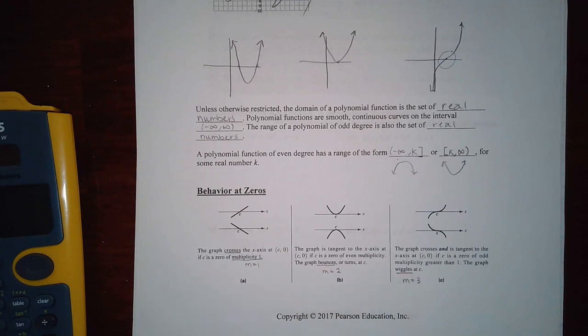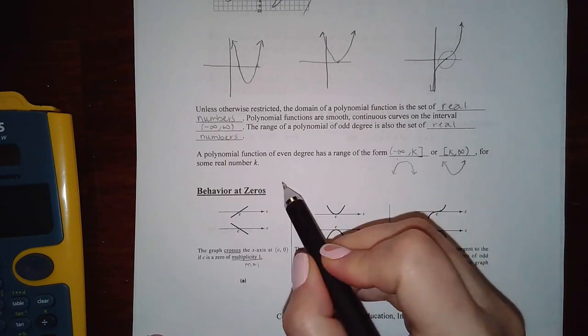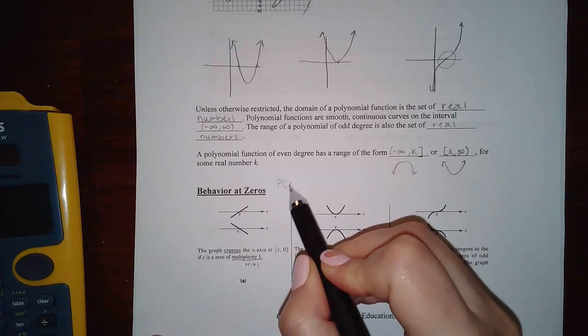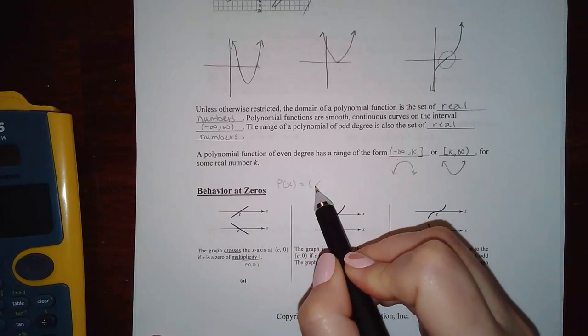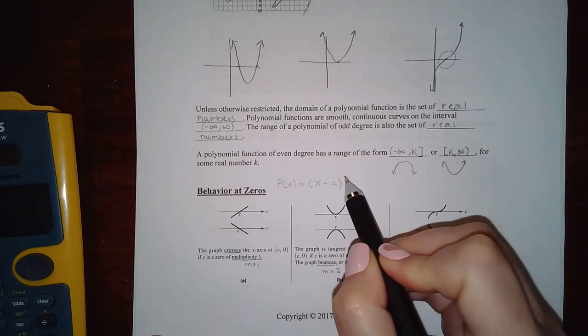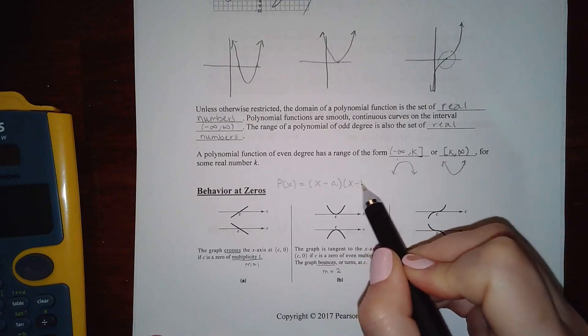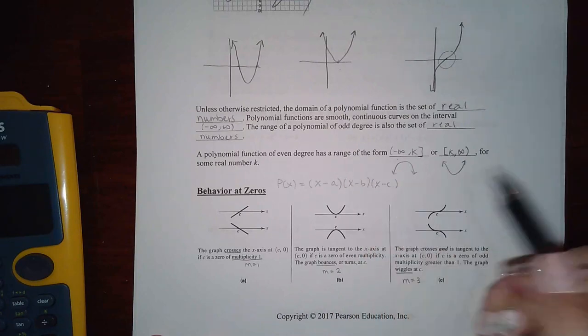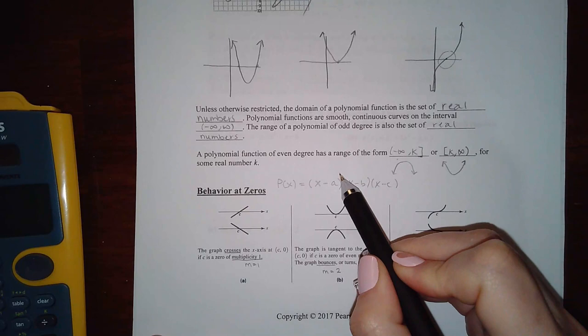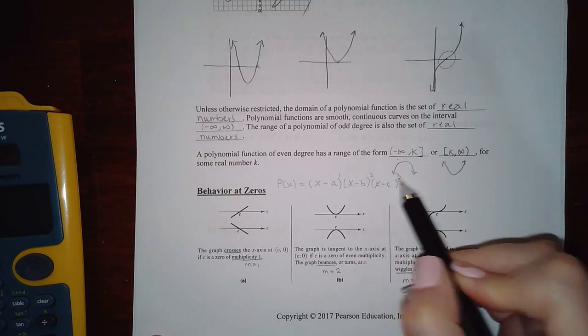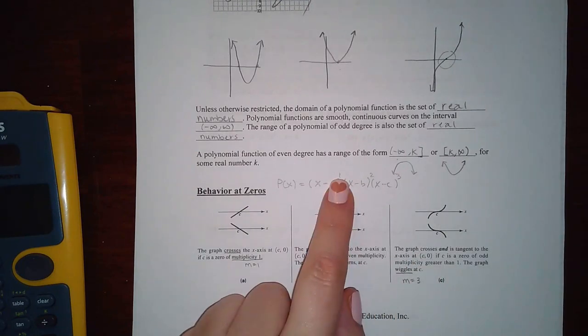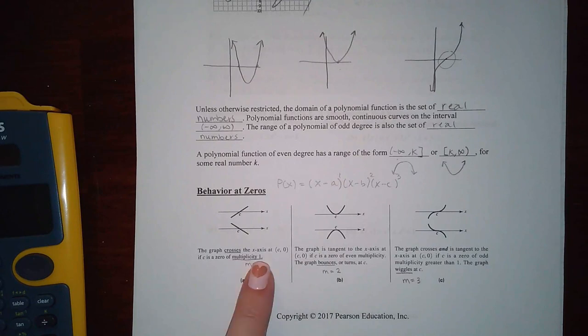Then there's what's called, what makes it do that is the multiplicity. And what that means is once you have your polynomial in its factored form, you're going to have x minus a, x minus b, x minus c, so on and so forth. This is going to have like a one, a two, and a three, right? If it has an exponent of one, that's multiplicity of one equals one, and that's what makes it cross.